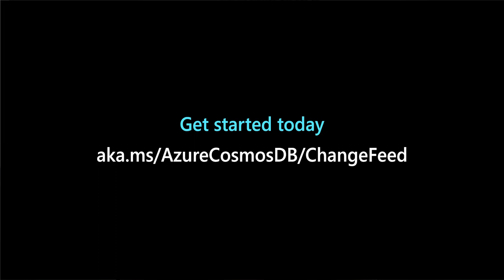When reading the change feed for the API for NoSQL, there are several ways to read the change feed, including an Azure Functions trigger, change feed processor, or the pull model. Any way you read it, the change feed will help you build applications to react to changes in Azure Cosmos DB containers, both in real-time and on-demand. To get started, check out aka.ms/AzureCosmosDB/changefeed.